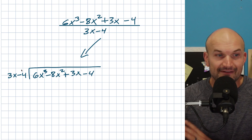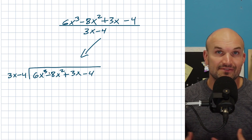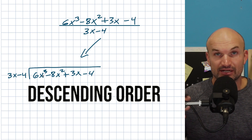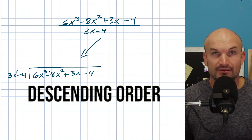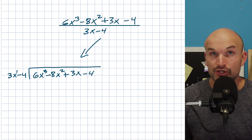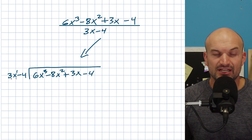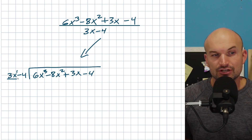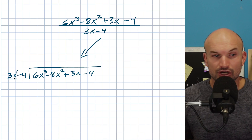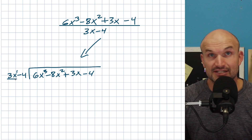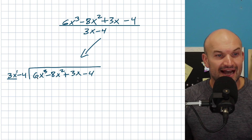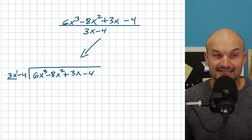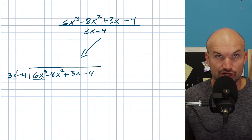When we're doing long division with polynomials, we need to make sure both our divisor and dividend are in descending order — the highest exponent is written first, going down from there. That's exactly how everything is written here. The reason this matters is that in long division, I'm dividing one term at a time. For my divisor, I'm only going to use the leading term, which in this case is 3x to the first power.